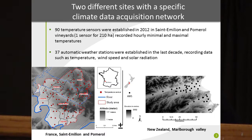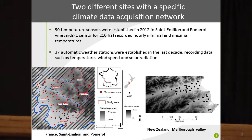These two different sites have specific climate data acquisition networks. For Saint-Emilion and Pomerol, 90 temperature sensors were established in 2012 and record hourly minimum and maximum temperatures. In New Zealand, 37 automatic weather stations were established in the last decade and record data such as temperature, wind speed, and solar radiation.